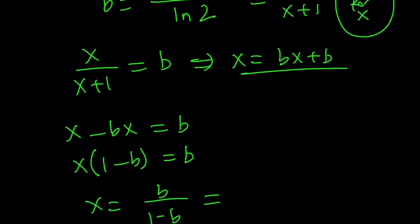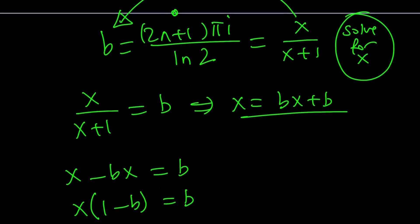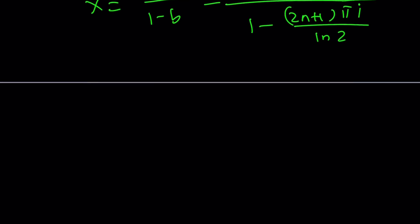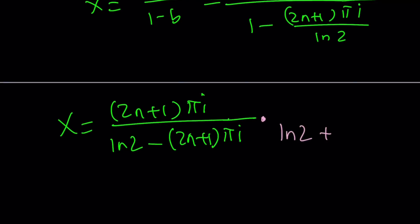Now, replace b with what it is. b is 2n plus 1 pi i over ln 2 divided by 1 minus that. Obviously, we're going to have a common denominator when we simplify this. Multiply both the top and the bottom by ln 2 if you want. But from here, x becomes 2n plus 1 times pi i divided by ln 2 minus 2n plus 1 times pi i. Now, if you don't like this and wanted to modify the denominator, get rid of the i at the bottom, you can multiply by the complex conjugate, and top and bottom distribute and take care of i squared equals negative 1, and you'll get the answer. I'm going to leave it to you and show you the graph.